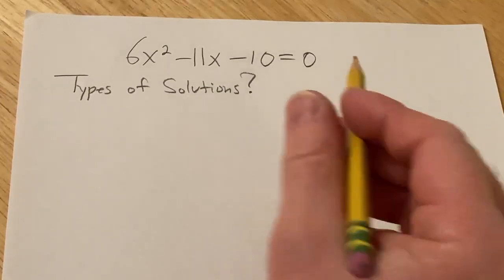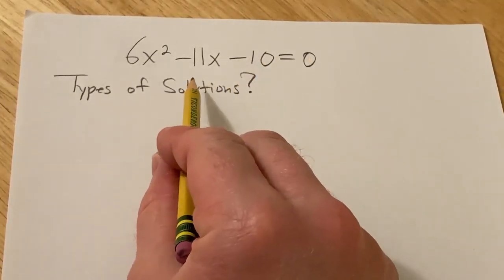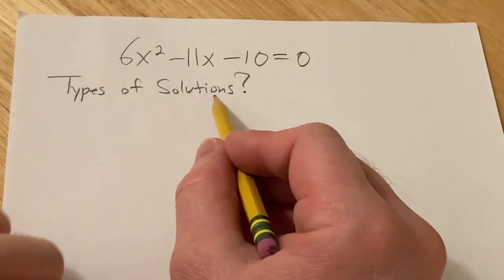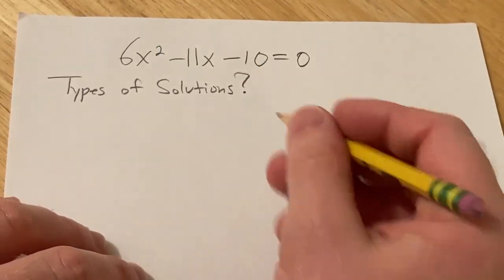Hi, in this problem we have a quadratic equation and we're going to look at the types of solutions that it has. To do that we're going to look at a quantity called the discriminant.